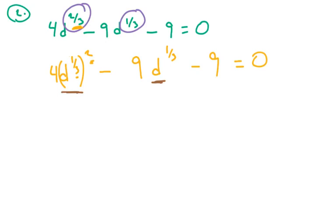Now that both of these are d to the one-third, I can let d to the one-third equal another variable, which I'm going to call x. So now I can say 4x squared minus 9x minus 9 equals 0.